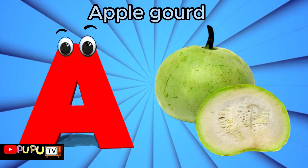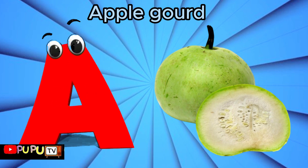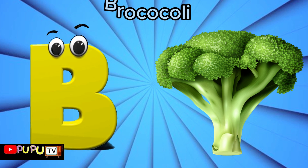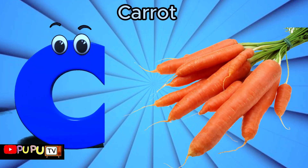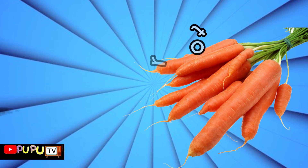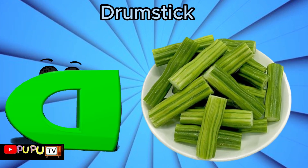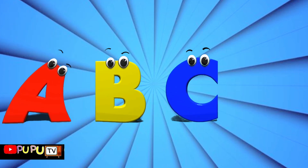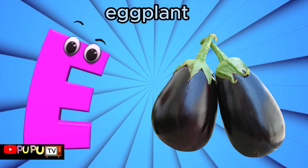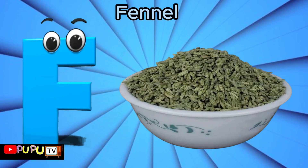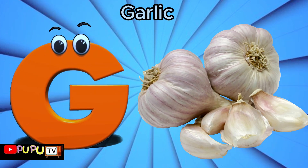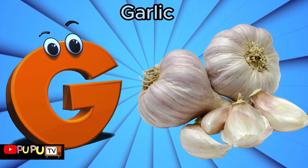A is for apple gourd. B is for broccoli. C is for carrot. D is for drumstick. E is for eggplant. F is for fennel. G is for garlic. H...